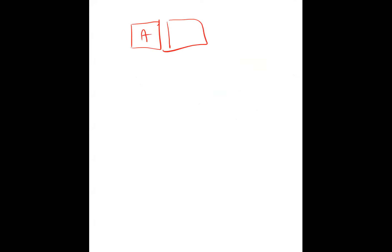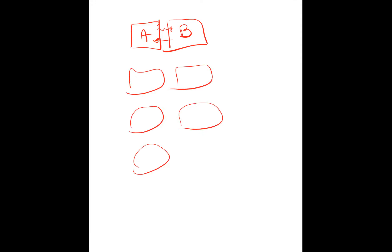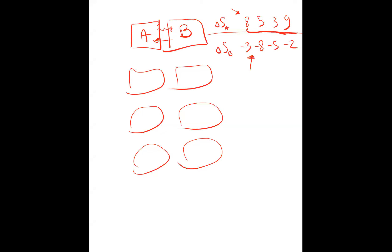It's a tricky question. There are two blocks, A and B, that exchange thermal energy — which direction we don't know — and as a result both their entropies change. We have four sets of entropy changes for A: 8, 5, 3, and 9. And for B: negative 3, negative 8, negative 5, negative 2. Since B's numbers are negative and A's are positive, block A is heating up and block B is cooling down. These numbers are not in order, so we have to match each number to its pairing number across all four pairs.